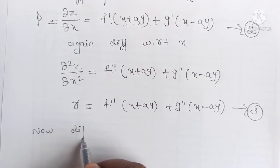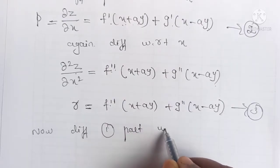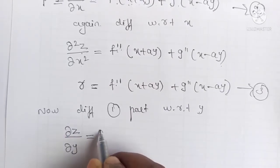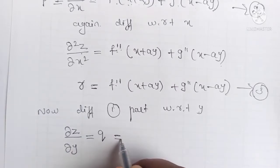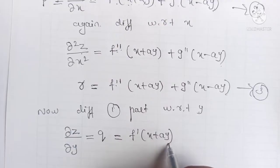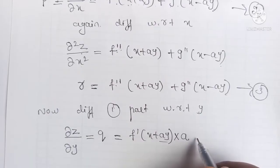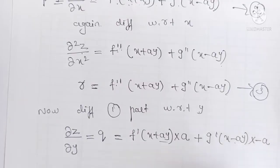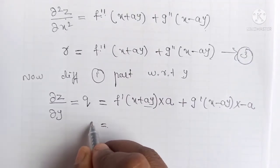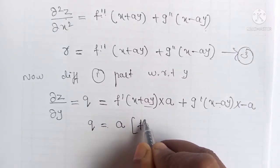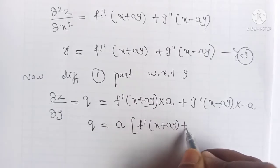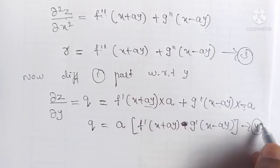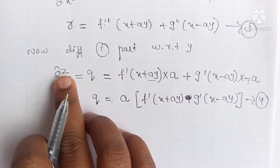Now differentiating equation 1 partially with respect to y, we get dou z by dou y, denoted q, equals f dash of (x + ay) into a plus g dash of (x − ay) into minus a. Taking a outside, q equals a times [f dash of (x + ay) minus g dash of (x − ay)]. Consider this as equation 4.